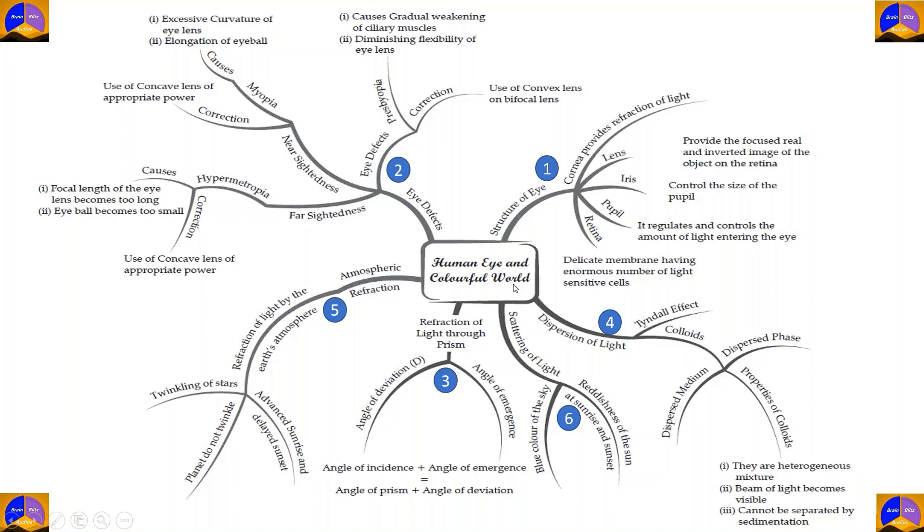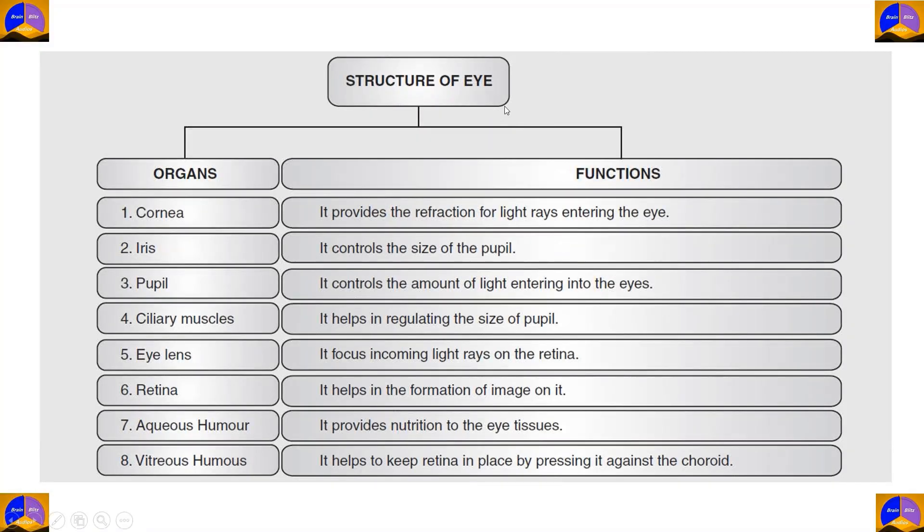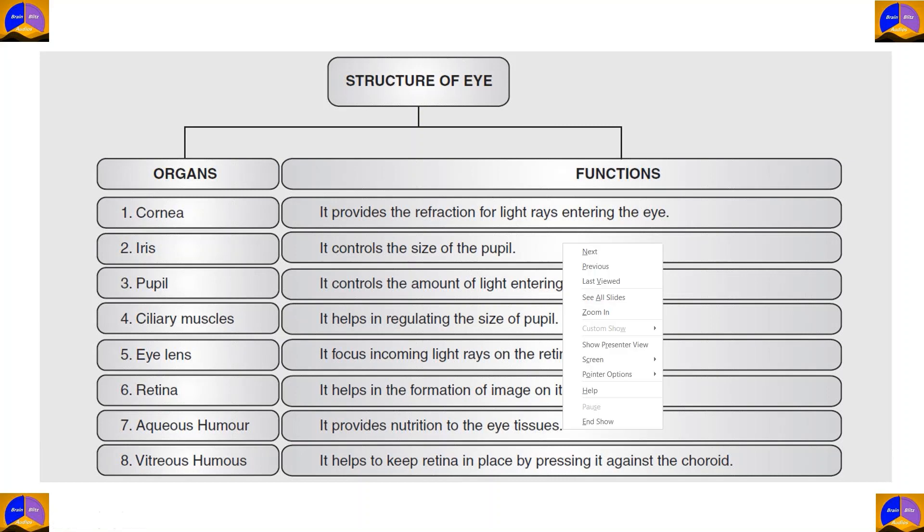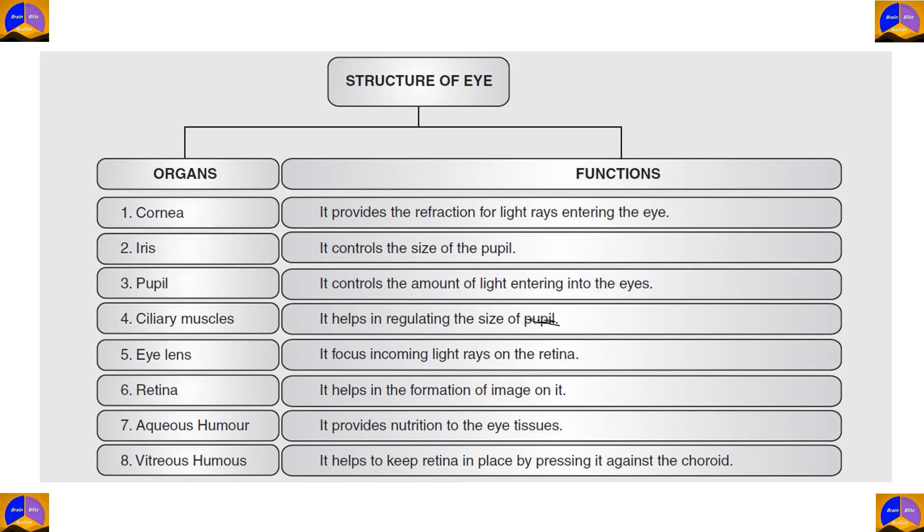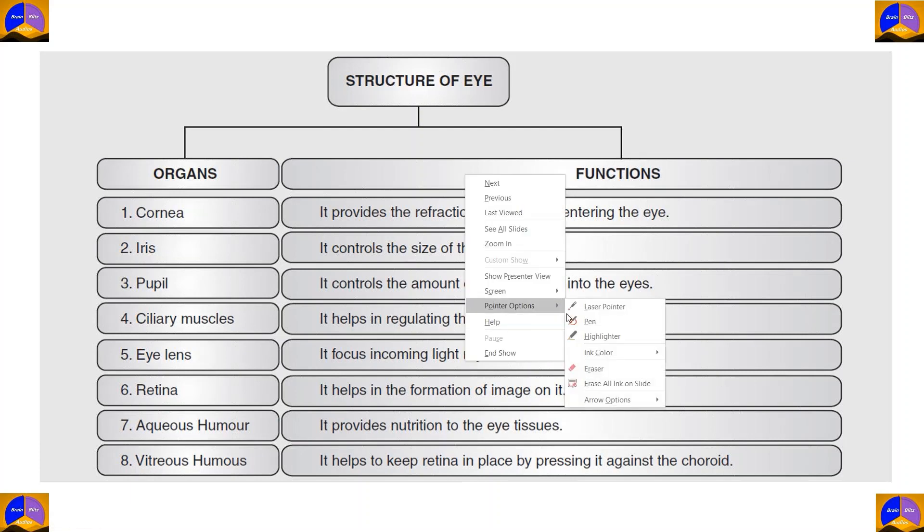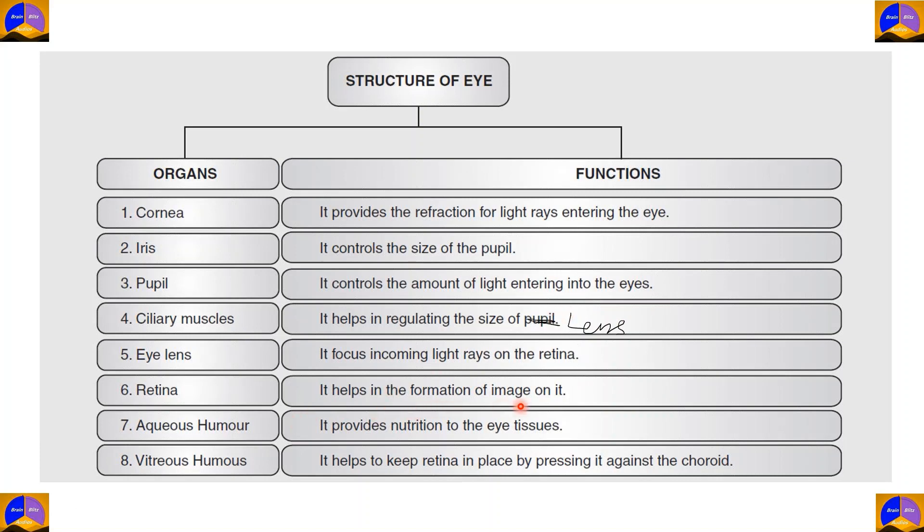Before we end, here's a flow chart to summarize the structure of the eye. First up is the cornea, which provides the refraction for light rays entering the eye. The iris controls the size of the pupil, which controls the amount of light entering into the eyes. The ciliary muscles help in regulating the size of the lens, the crystalline lens. The eye lens focuses incoming light rays on the retina. The retina helps us in the formation of an image. The image formed is inverted, but our brain interprets it and makes it correct.